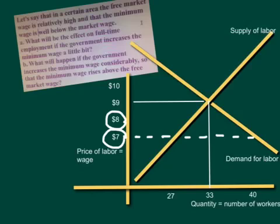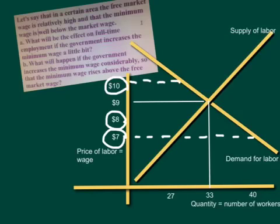Again, because it's a minimum. Part B asks what will happen if the government increases the minimum wage above the $9 — above the free market wage. So now there's going to be a difference. Let's say the minimum wage goes to $10. The businesses really, according to the market, want to pay $9. But the government is requiring businesses to pay $10. At $10, if we draw a line over to the demand curve, businesses are only going to want to hire about 29 or 30 million people.